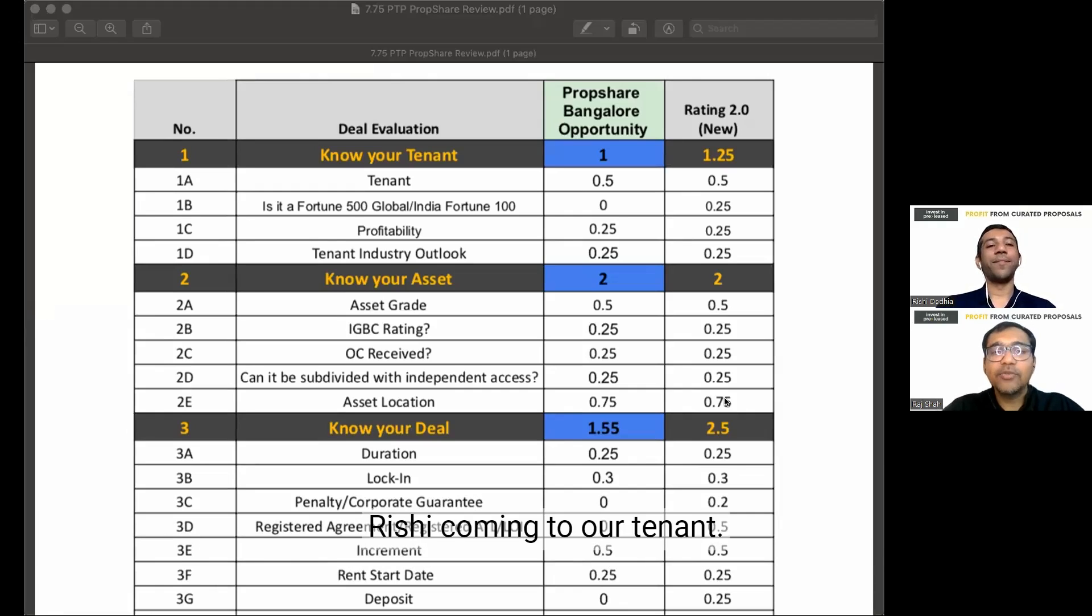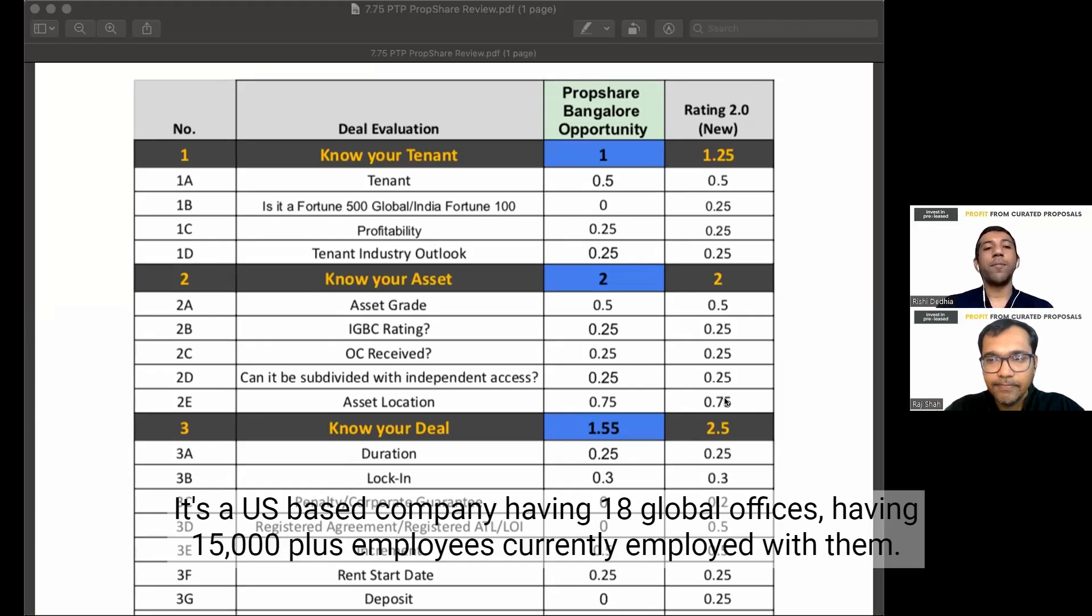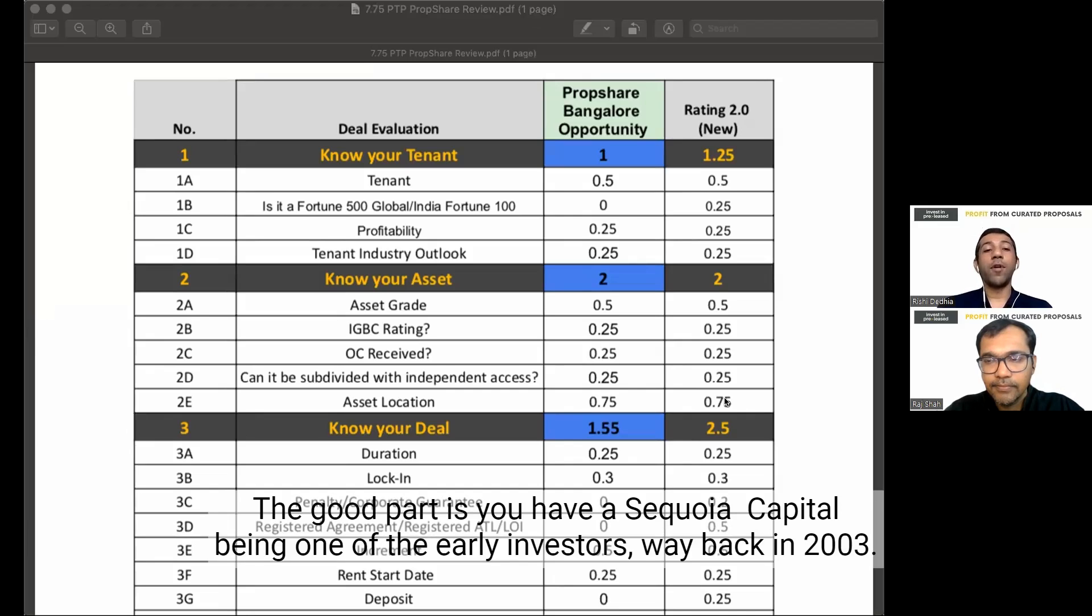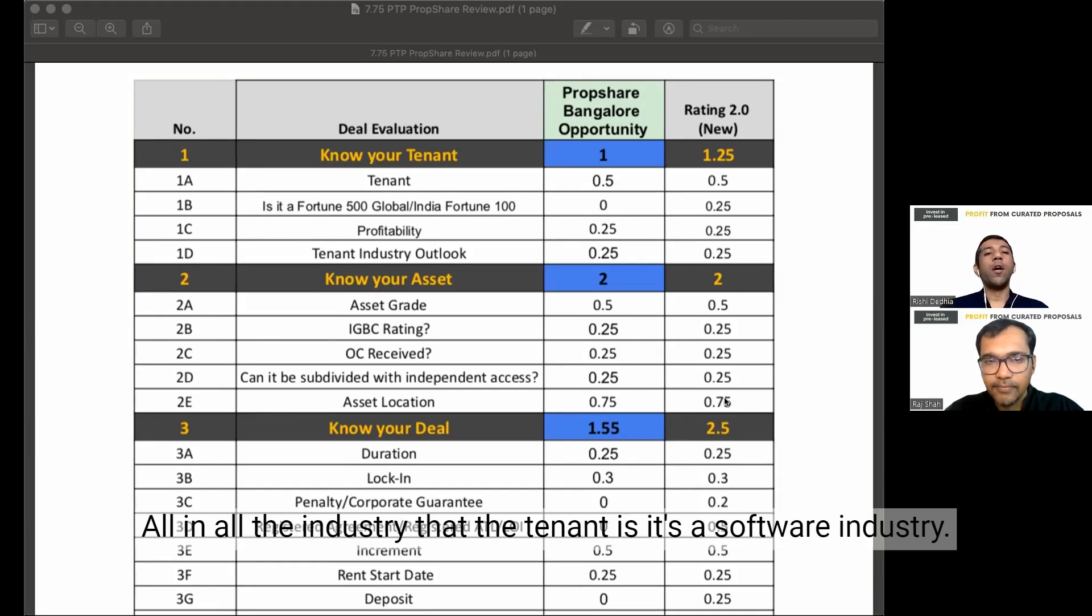Coming to our tenant, what do you think of the tenant? So Raj, the tenant here is a US-based company. It's into customer services and customer software services. It's a US-based company having 18 global offices, having 15,000 plus employees currently employed with them, and they have a revenue of more than 300 plus billion dollars.